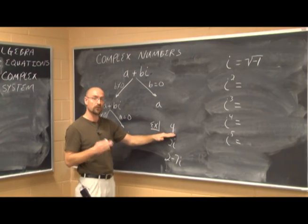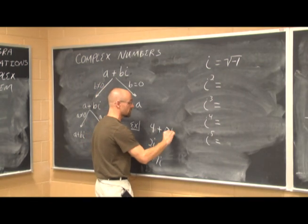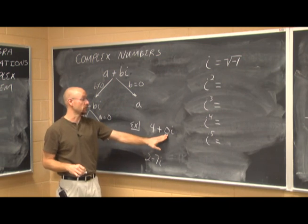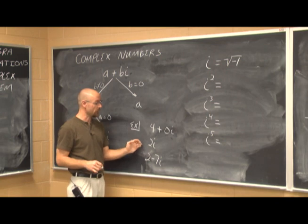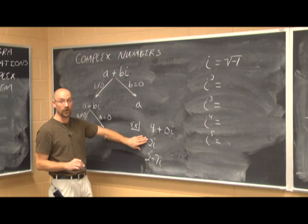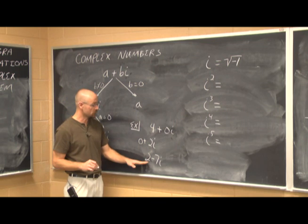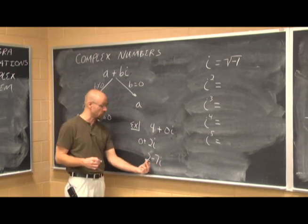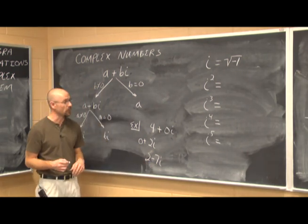For example, 4 is in the real number system but also in the complex number system — b is just 0. The number 2i means a is 0, making it a pure imaginary number with no real part. And 2 minus 7i has both a real part and an imaginary part, so a and b are both nonzero, and it's in a plus bi form.